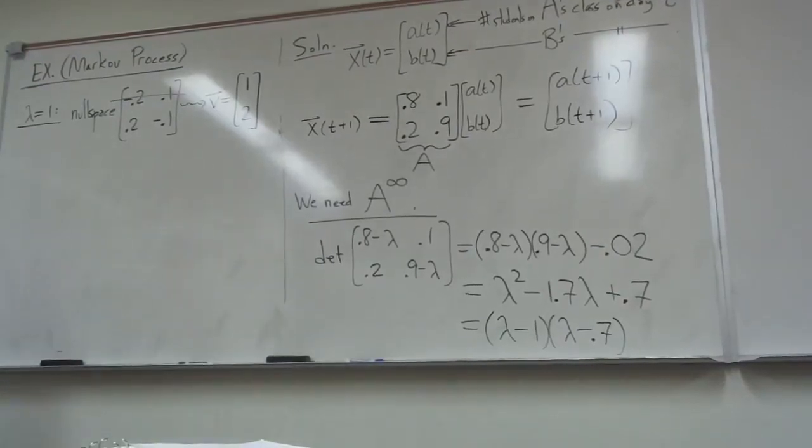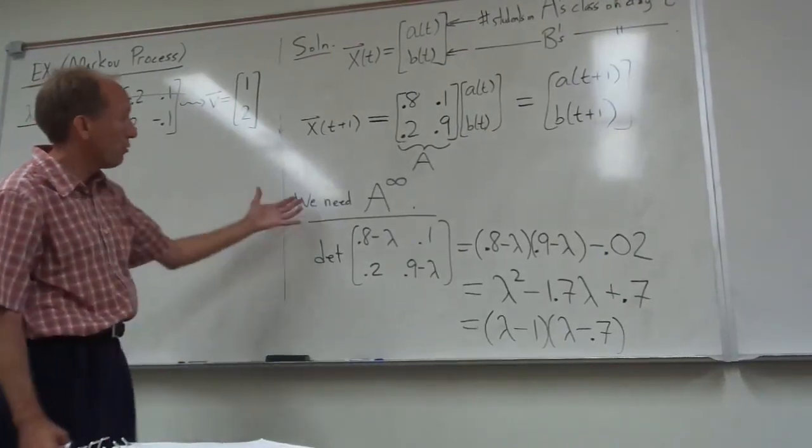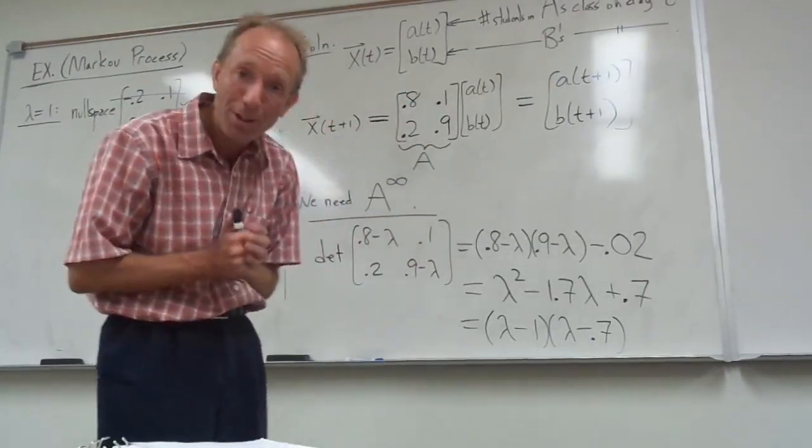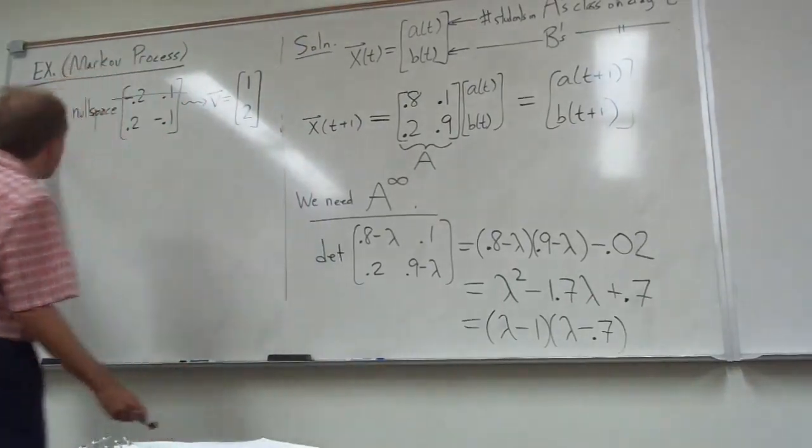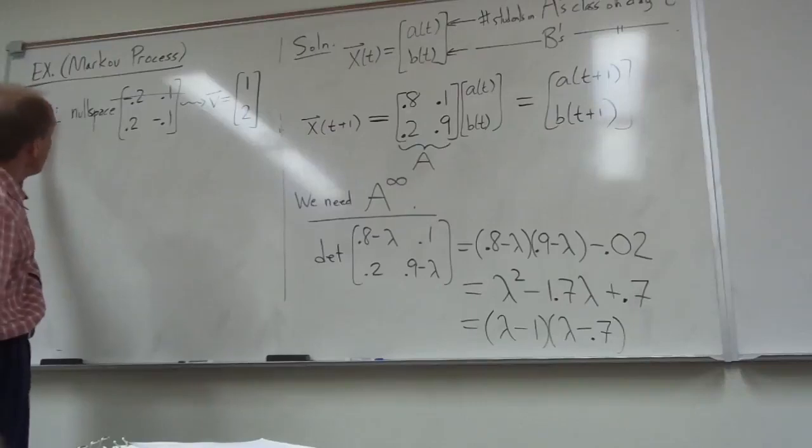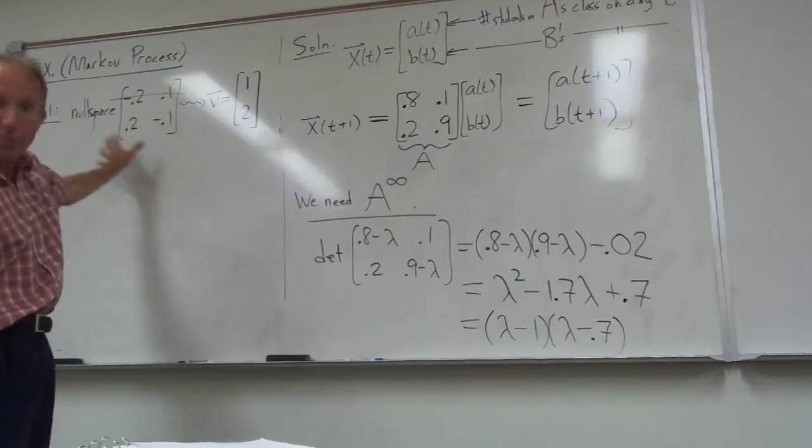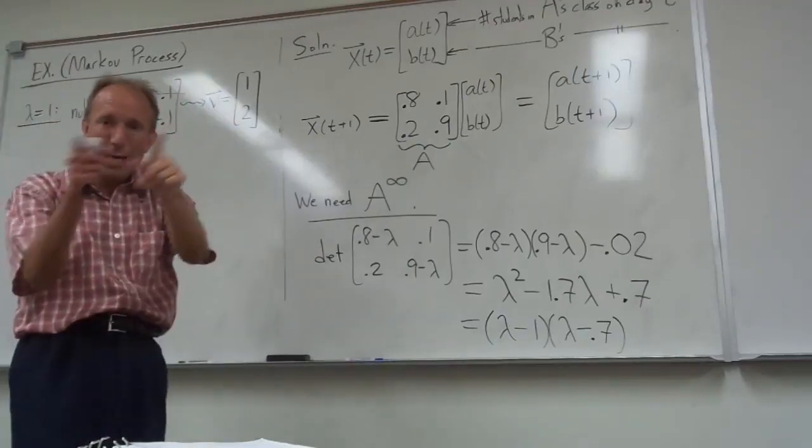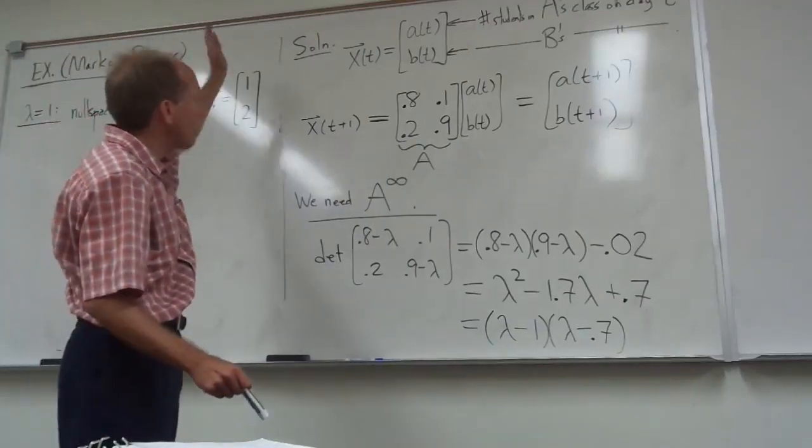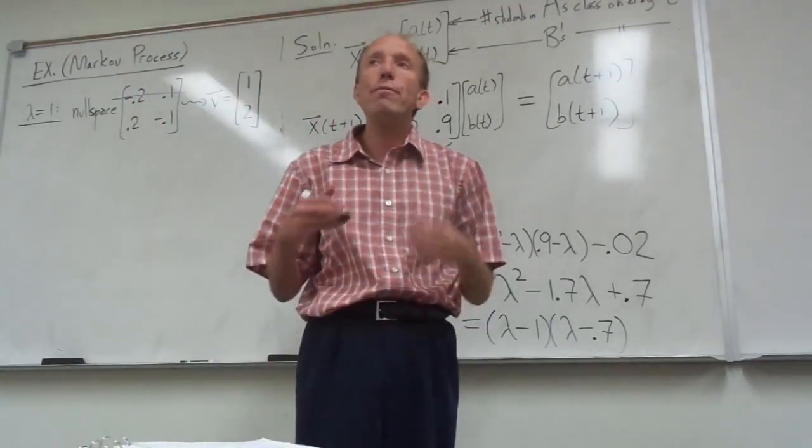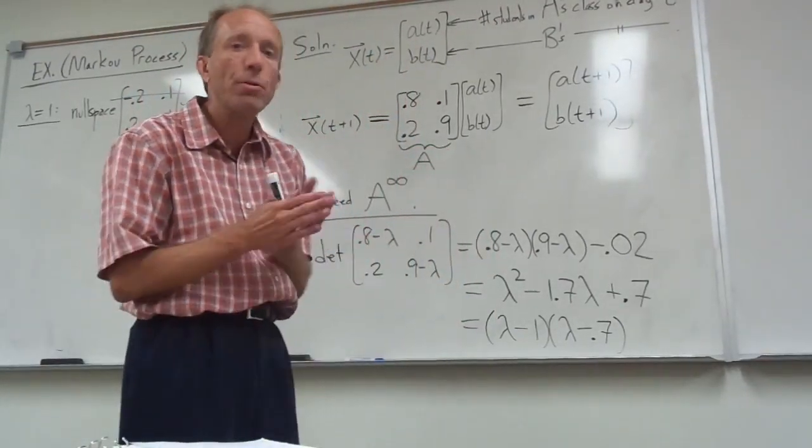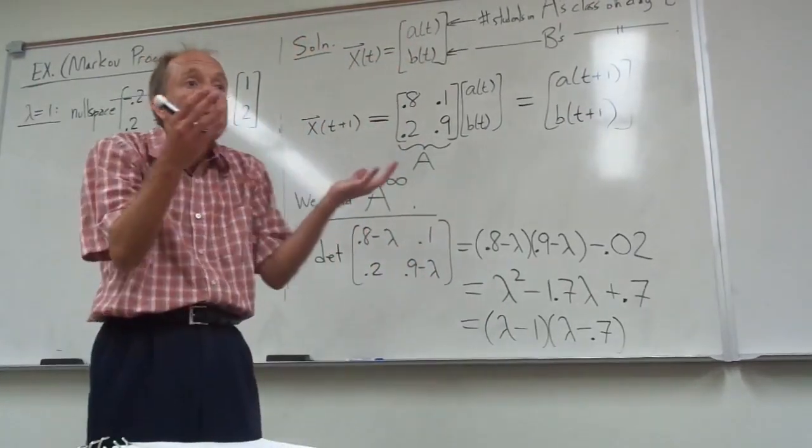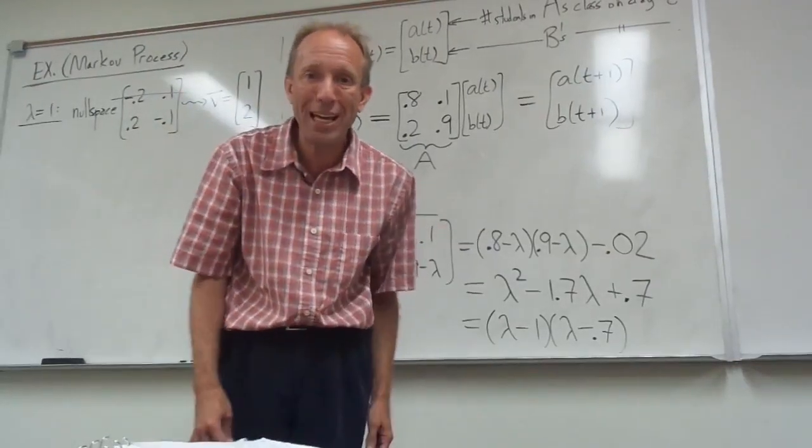Okay, just to recap here, I'm trying to find my eigenspaces for this matrix capital A right here, so that I can diagonalize the matrix capital A. And I was just starting to look at lambda equals 1, and I need to find this null space of A minus lambda I. I cross off a row. I'm doing my little trick where I swap the two entries, and I'm going to multiply through by 10. If you have an eigenvector, remember it forms a whole eigenspace. Any multiple of an eigenvector is another eigenvector because it's closed under scalar multiplication.